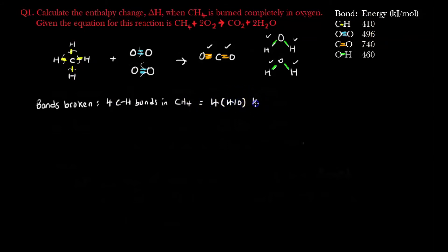Makes sense so far, right, because to break all the bonds here, there are 4 of them, 1, 2, 3, 4, and that's why I take 4 times 410, because each CH bond is 410 worth of energy, and there are 4 of them, so I times 4.